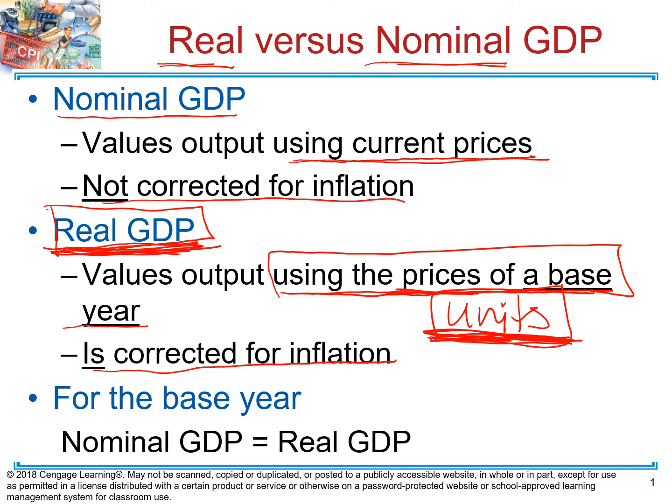Economies are always looking at production. If we produce more goods and services in the economy, quantity-wise, it means the economy is growing — and that's always a positive thing. So real GDP is exactly what helps us look at that. Let's go to an example, which will make it much easier to understand.